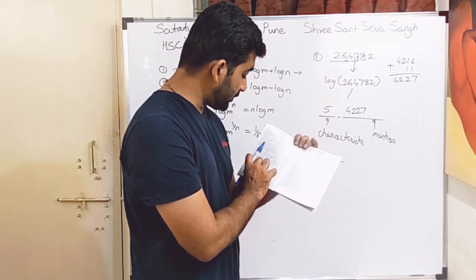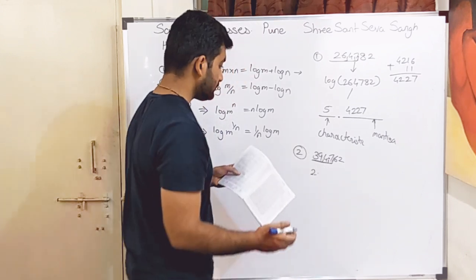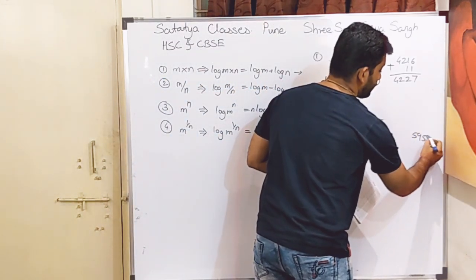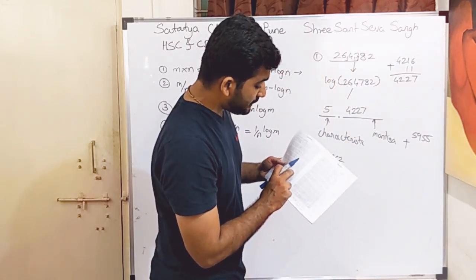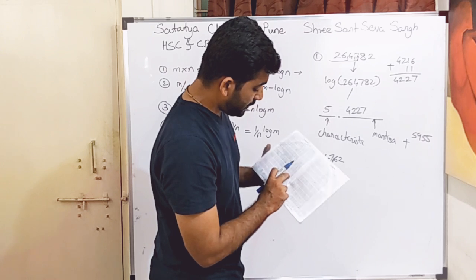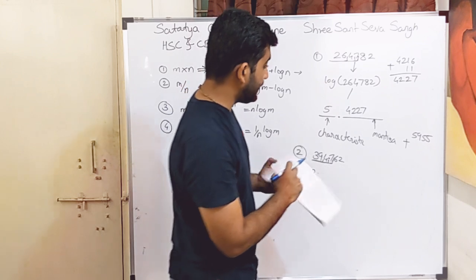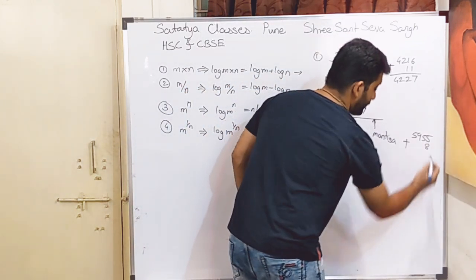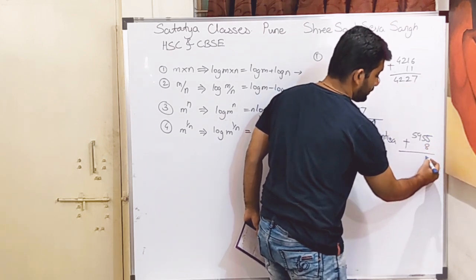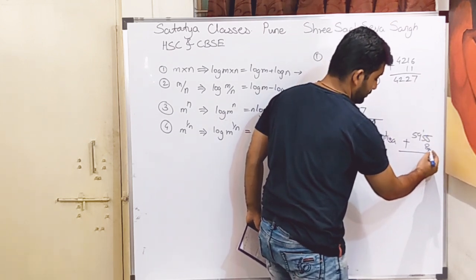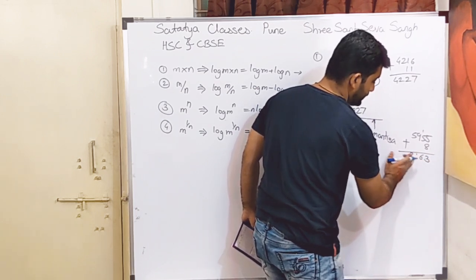Looking up 39 in the fourth column of the log table gives 5955. Then in front of row 39, we find the value in column 7 of the mean difference, which is 8. Adding 5955 and 8 gives 5963.